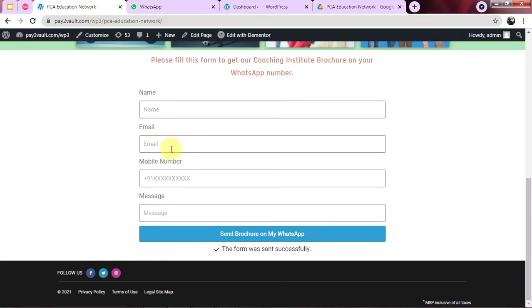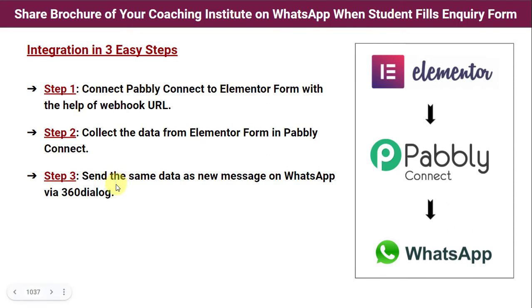I followed three very simple steps to create this automation. Step one is to connect Pabbly Connect to the Elementor form with the help of a Webhook URL — first we log in to Pabbly Connect, then connect our Elementor form with Pabbly Connect by copying and pasting the Webhook URL. In step two, we collect the data from the Elementor form in Pabbly Connect.